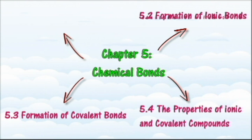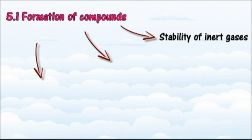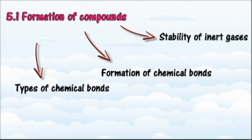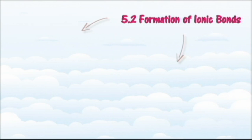In section 5.1 we will learn about the formation of compounds. At the end of this section you should be able to explain the stability of inert gases, explain conditions for the formation of chemical bonds, and state the types of chemical bonds.